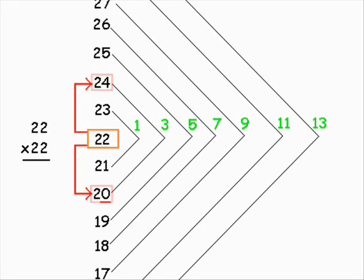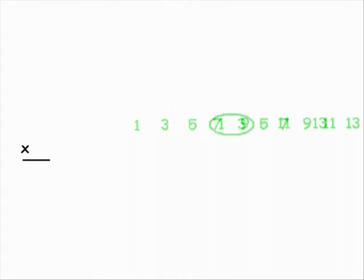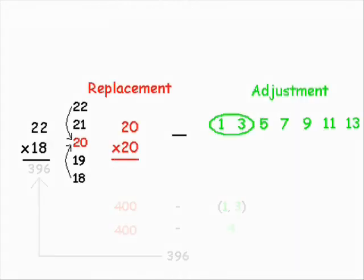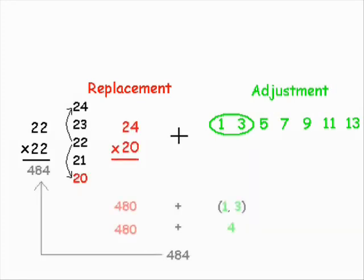When I saw that this answer just happened to be two odds away again, I thought, whenever using a replacement problem that lies inward, you subtract the adjustment, and when using a replacement problem that lies outward, you add the adjustment.